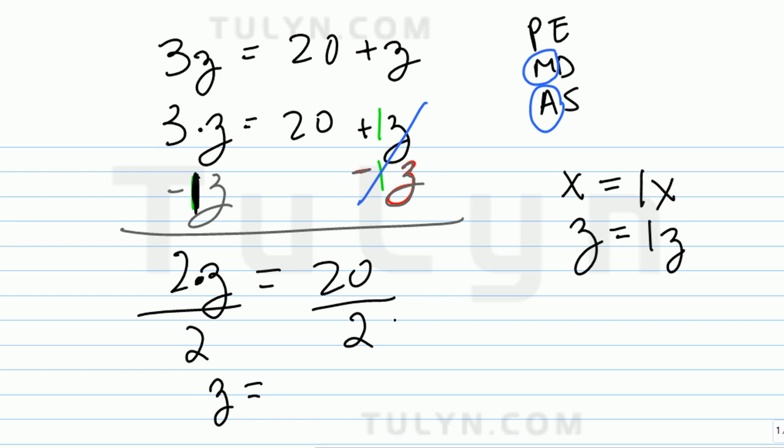So you get z equals 20 over 2. Remember, this means division, that line in the middle. 20 divided by 2, and that's 10. So z equals what? 10.